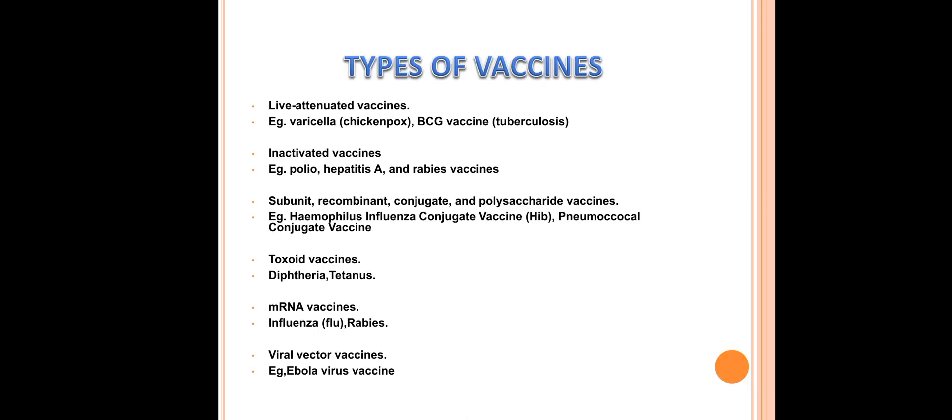Types of vaccines include live attenuated vaccines such as varicella, chickenpox, and BCG vaccine for tuberculosis. Inactivated vaccines include polio, hepatitis A, and rabies vaccines. There are also subunit, recombinant, conjugate, and polysaccharide vaccines — examples include Haemophilus influenzae conjugate vaccine, HIV, and pneumococcal conjugate vaccine. Toxoid vaccines include diphtheria and tetanus. mRNA vaccines include influenza and rabies. Viral vector vaccines include the Ebola virus vaccine.